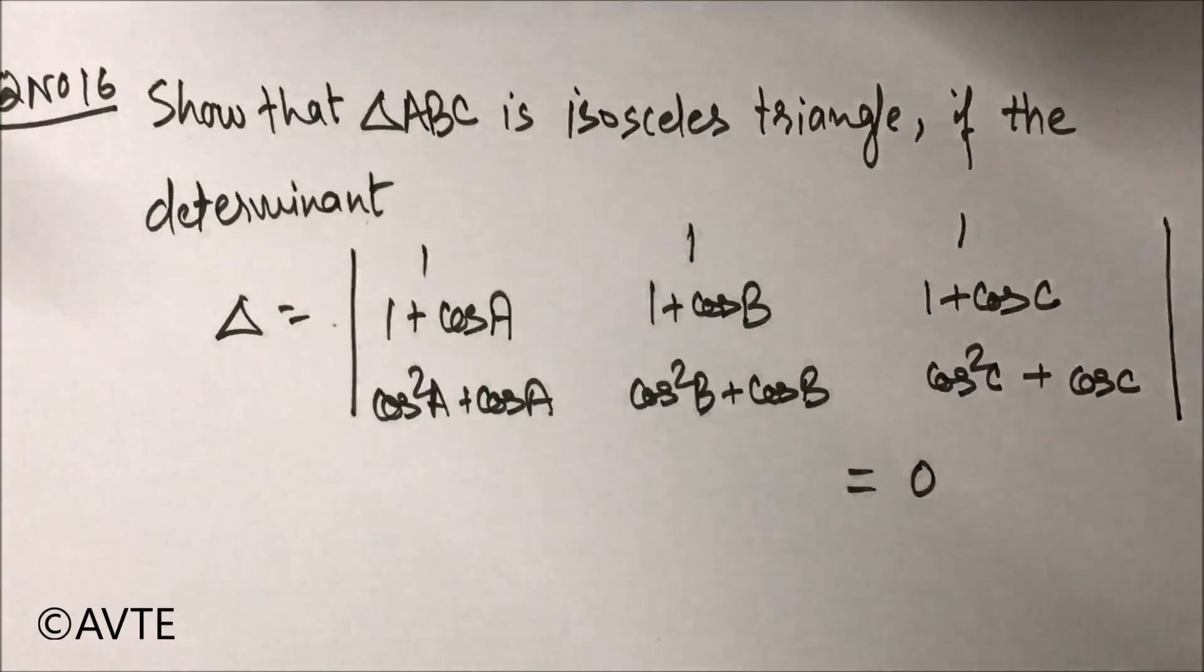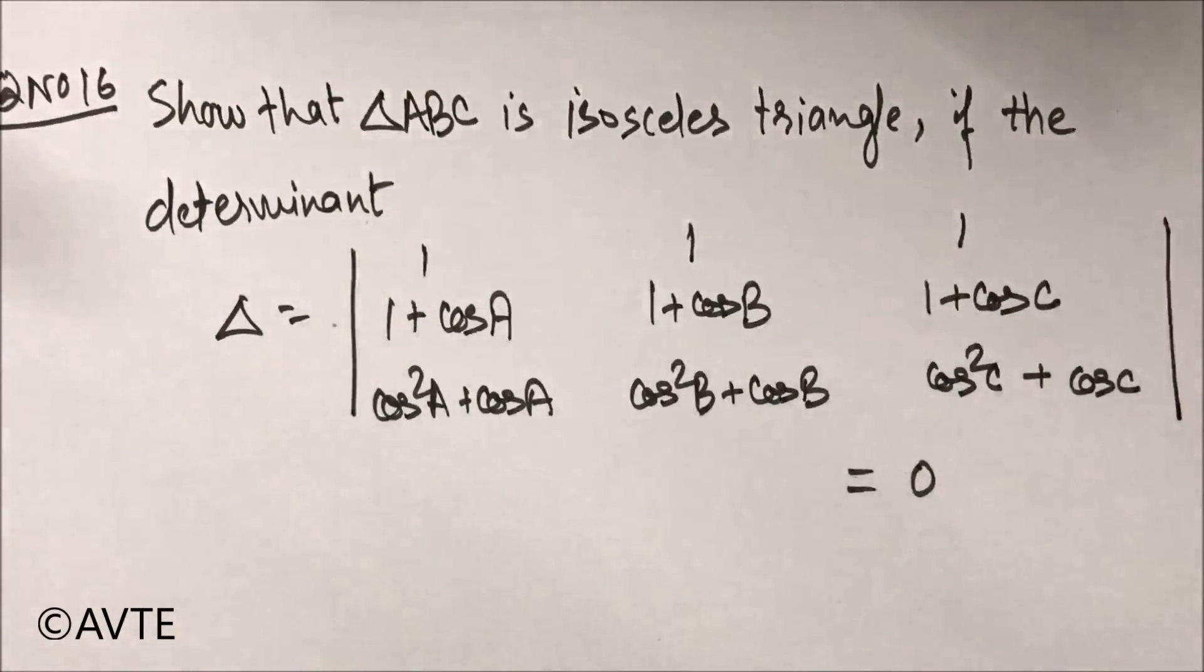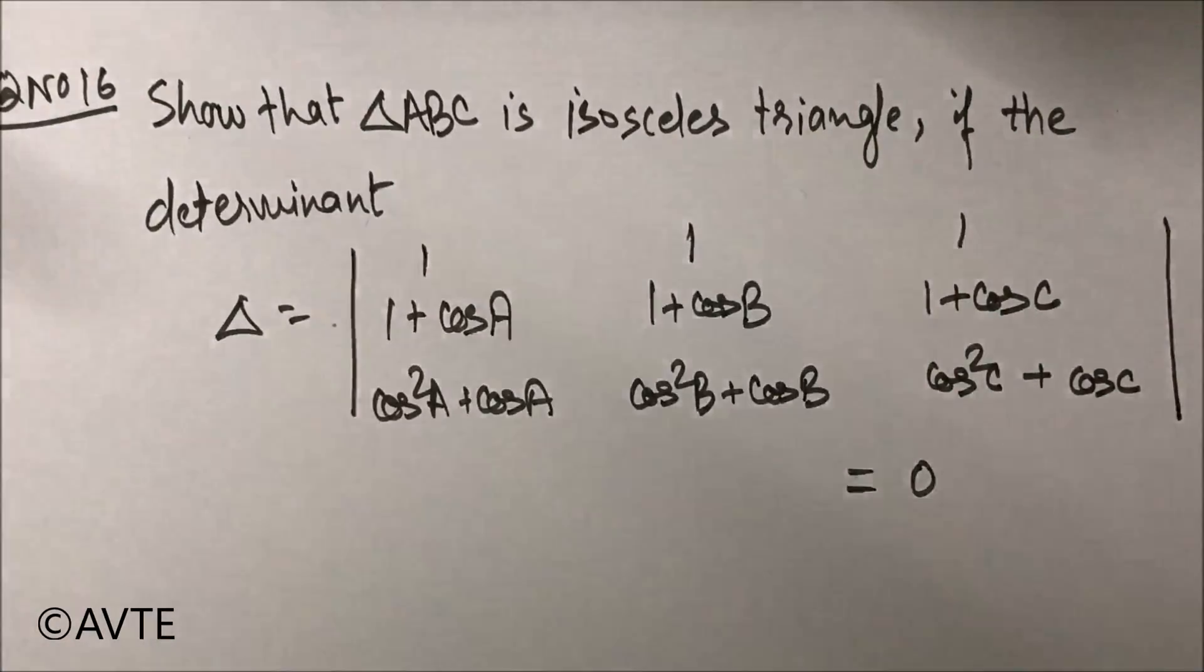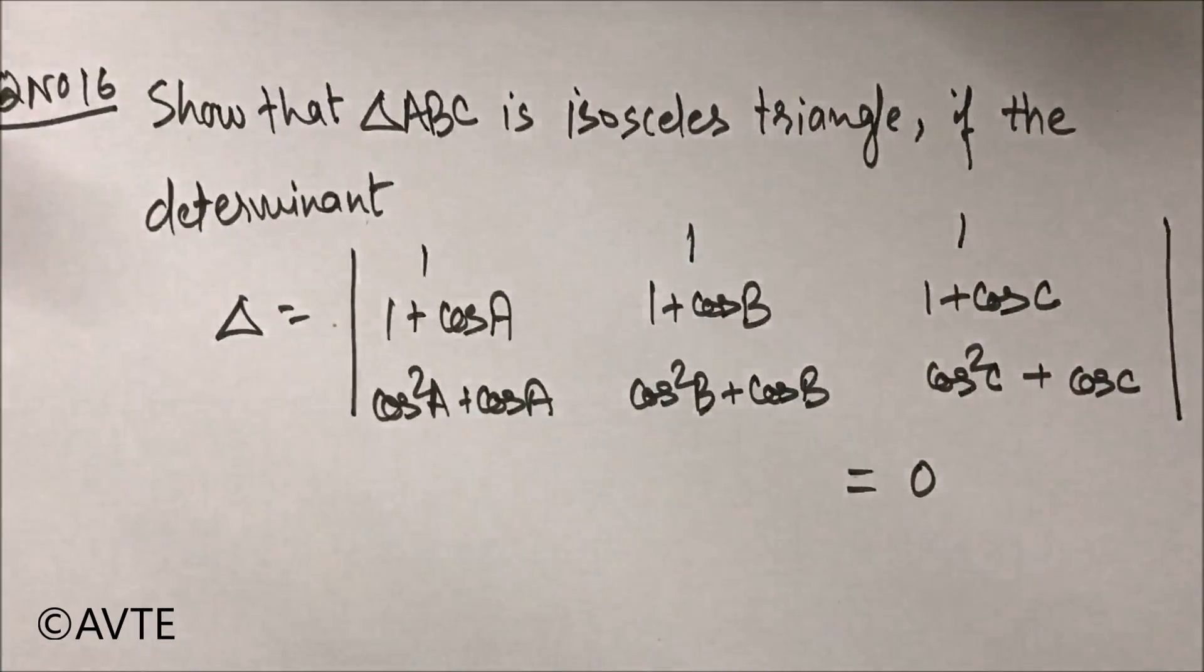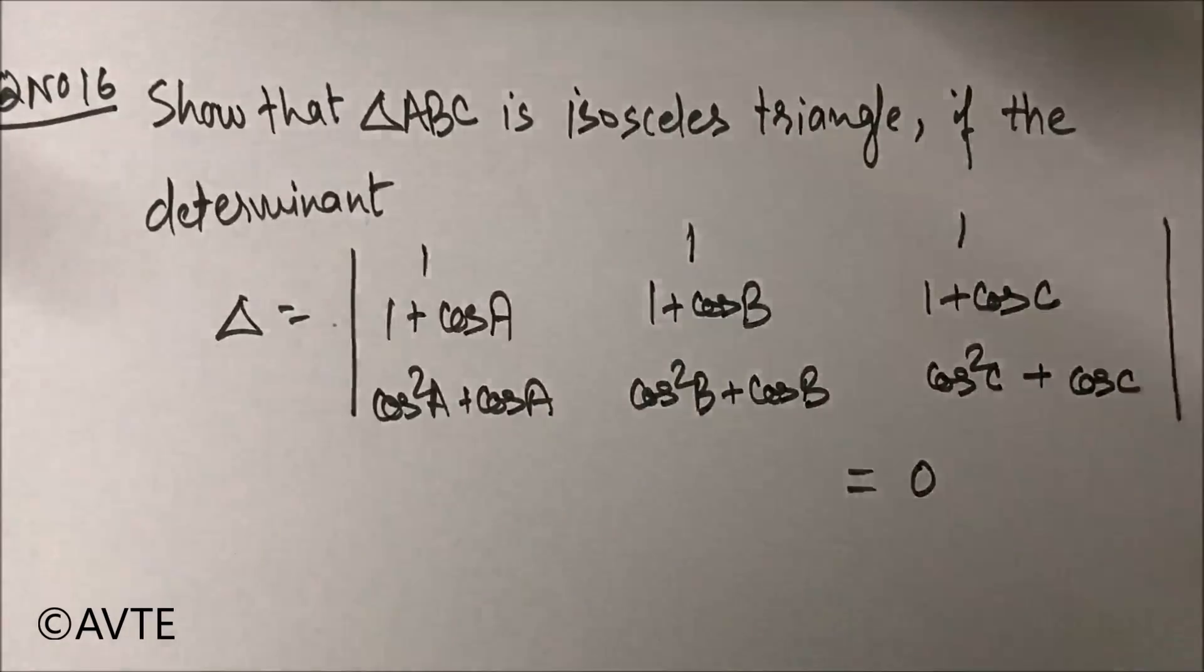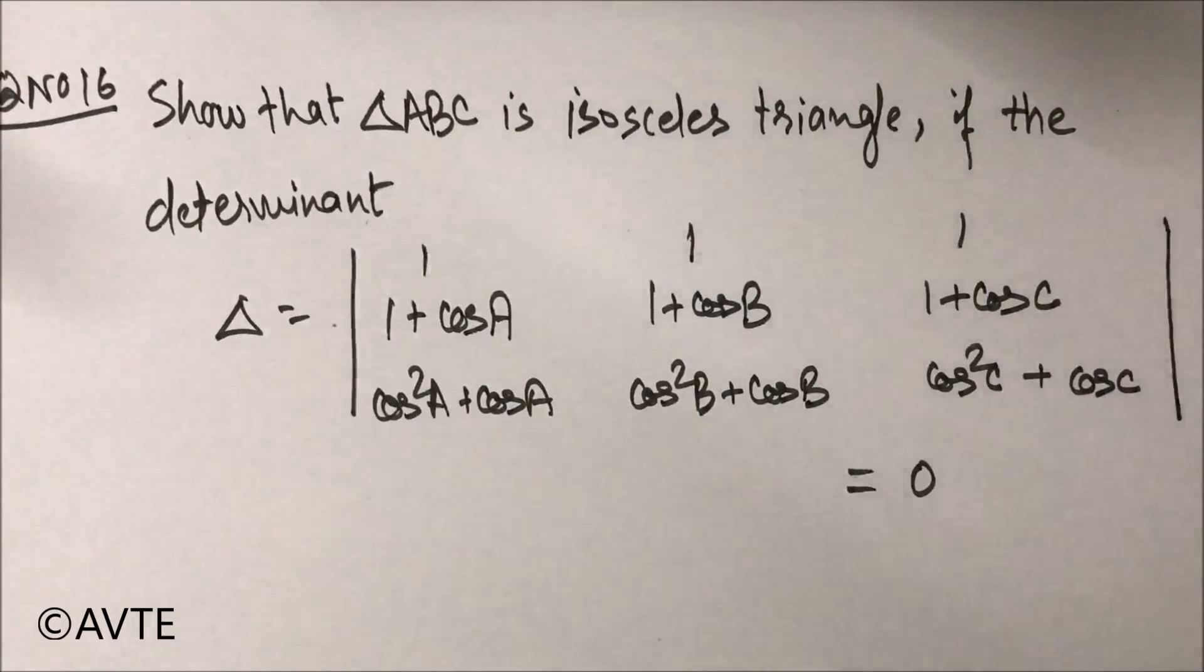So in the first line, delta ABC is the symbol of a triangle, whereas delta is used down below for the determinant. Well, because the value of the determinant is given as zero, so obviously you need to solve it and you need to get that two of the angles or two sides are equal.